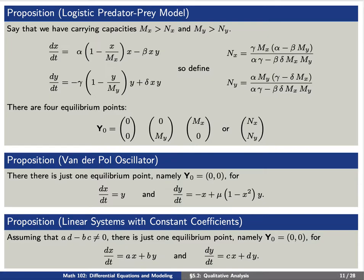We also consider the van der Pol oscillator. In this case, there is just one equilibrium point, namely the origin. And finally, we've considered the linear systems with constant coefficients. They are all in the form dx/dt equals a times x plus b times y, and dy/dt equals c times x plus d times y. Assuming that the determinant ad minus bc does not equal zero, we found that there is just one equilibrium point, namely the origin.